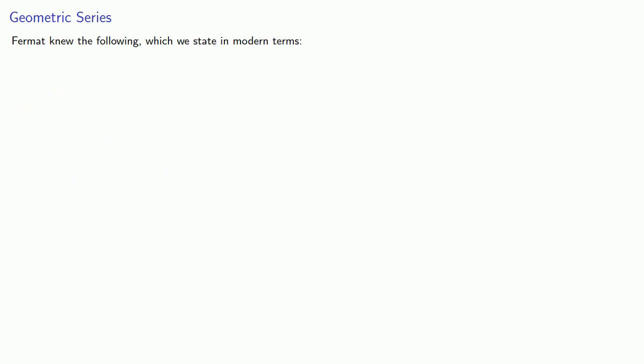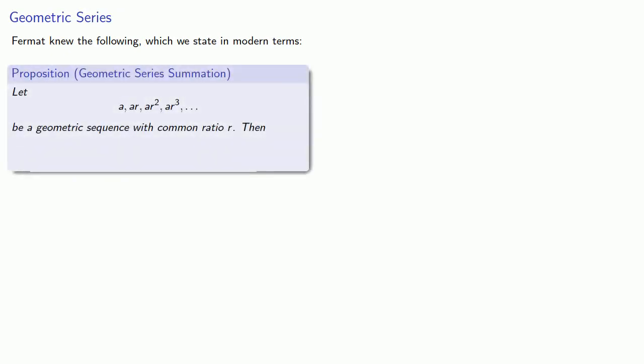Fermat knew the following, which we state in modern terms. Let A, AR, AR squared, AR cubed, and so on be a geometric sequence with common ratio r. Then A over 1 minus r is the sum of the infinite series. The important thing here is that if we can partition a region into areas in geometric progression, we can find the sum of all of the areas.